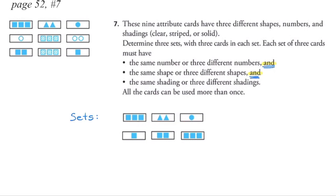So far I've used three solid cards. Can we incorporate a set using the clear or striped cards? We already know we don't have enough for all clear or all striped, so we could try one with three different shadings. I know I'll need three striped squares as my only striped card, which means three different numbers since I don't have three circles. I have a card with two circles, giving two different shapes and two different shadings. If I need three different shapes and three different shadings, I'd need a one-triangle card, which I don't have.